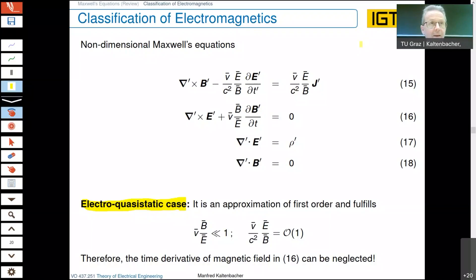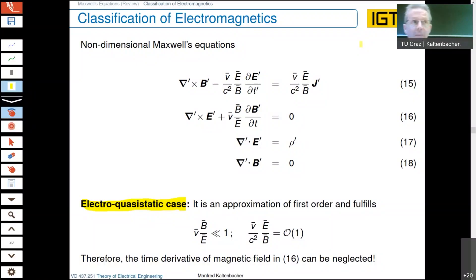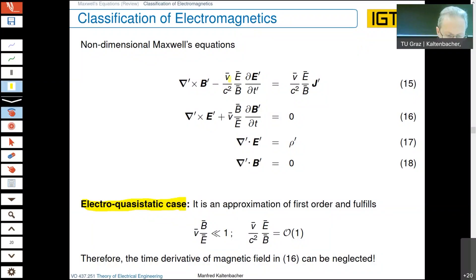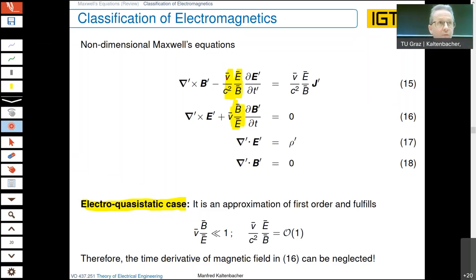The next part in our discussion after the static case is now a first dynamic case, which we call the electro-quasi-static case. In this sense, the following relations have to be assumed. I again mark these two very important scaling parameters where you put in a characteristic velocity of moving bodies. We have the speed of electromagnetic waves, a characteristic amplitude of the electric field, and a characteristic amplitude of the magnetic field.